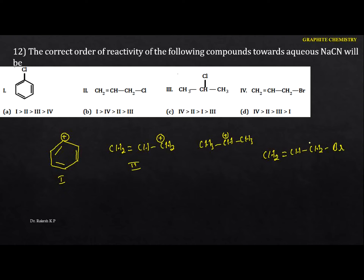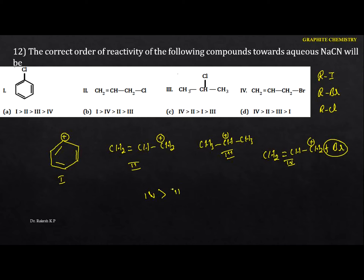Both the second and fourth compound can give allylic carbocations. Among alkyl halides, reactivity order is iodide > bromide > chloride. Since there is no iodide here, the alkyl bromide (fourth compound) is most reactive. Next comes the allyl carbocation (second), then the secondary carbocation (third), and the least reactive is the first (aryl halide). The option is D.